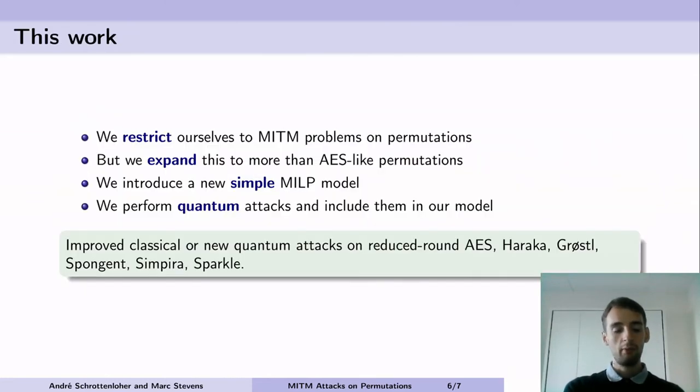In our paper we went into a different direction. We actually restricted our study to permutations, so the difference is that now we don't have any degree of freedom in the key schedule because it's only a permutation, so there is something that simplifies a lot. But it turns out that using this restricted setting you could expand this to more than AES-like permutations and introduce an MIP model still based on MIP but which is very simple. In this model we also include quantum attacks, so we define quantum meet-in-the-middle attacks and include them as a new optimization goal.